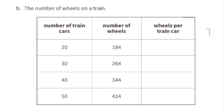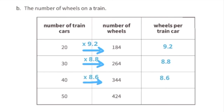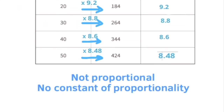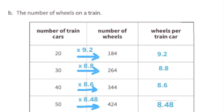Part b: the number of wheels on a train — 20×9.2=184, 30×8.8=264, 40×8.6=344, 50×8.8=424. This table is not proportional because you are not consistently multiplying the number of train cars by the same number to get the number of wheels on the train.